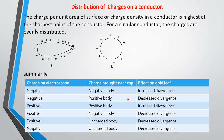The next area of static electricity to take note of is the distribution of charges on a conductor. By experiment we observe that charge per unit area of surface — or charge density — in a conductor is highest at the sharpest point of the conductor. If you have a conductor with a sharp point, the concentration of charges is greater at that sharp end. If you have a circular or uniform body, the charges are evenly distributed on that body.